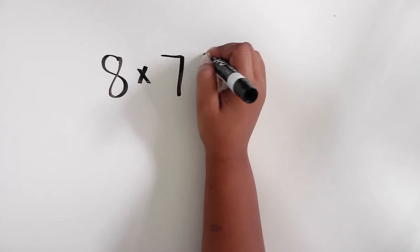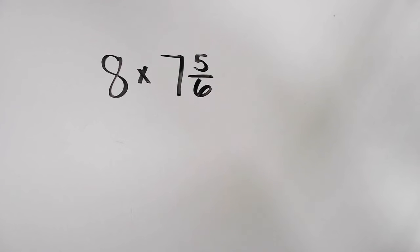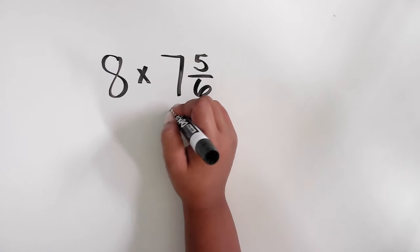The expression is 8 times 7 and 5/6. You can decompose that mixed number into its whole number and its fraction.